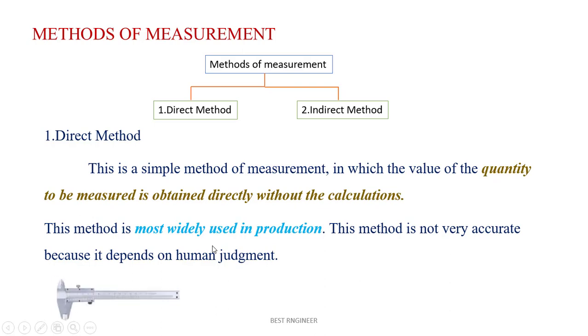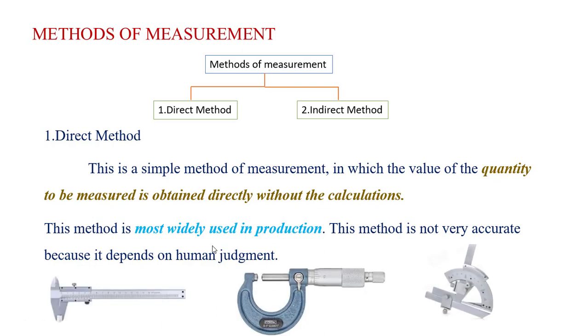For example, vernier caliper, micrometer, and bevel protractor. These all are direct method measuring instruments.